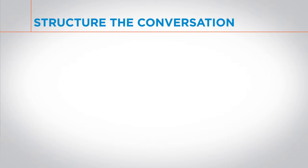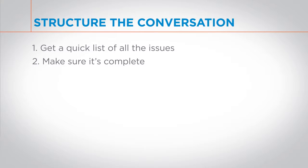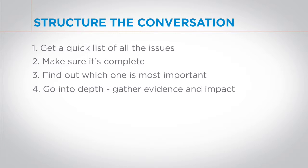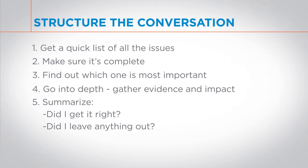The first step is to make a quick list of all of the issues. The second step is to make sure that that list is complete. The third step is to find out which priority on the list is most important. The fourth step is to gather evidence and impact on the priority issue. The fifth step is to summarize all of what you've heard and then end by asking two questions: did I get it right, and did I leave anything out?